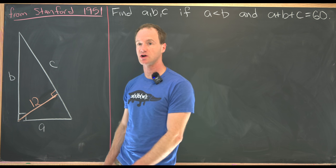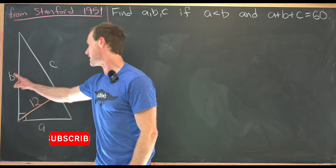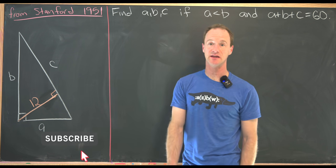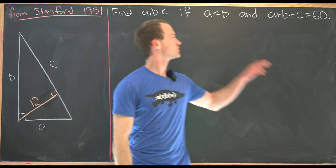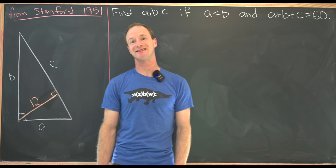So we've got a right triangle with side length A, B, and hypotenuse C, and we know the perimeter is 60. So I've written that as A plus B plus C equals 60.